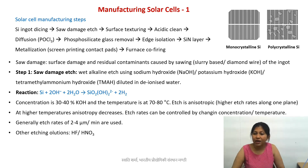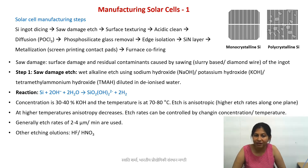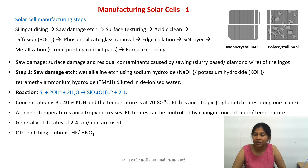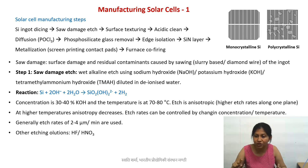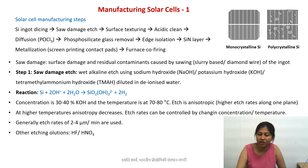In addition to KOH, you can also use an acidic etch at this point, using hydrofluoric acid or nitric acid. These are the methods for removing the saw-damaged portion, which is the first step of manufacturing silicon-based solar cells.